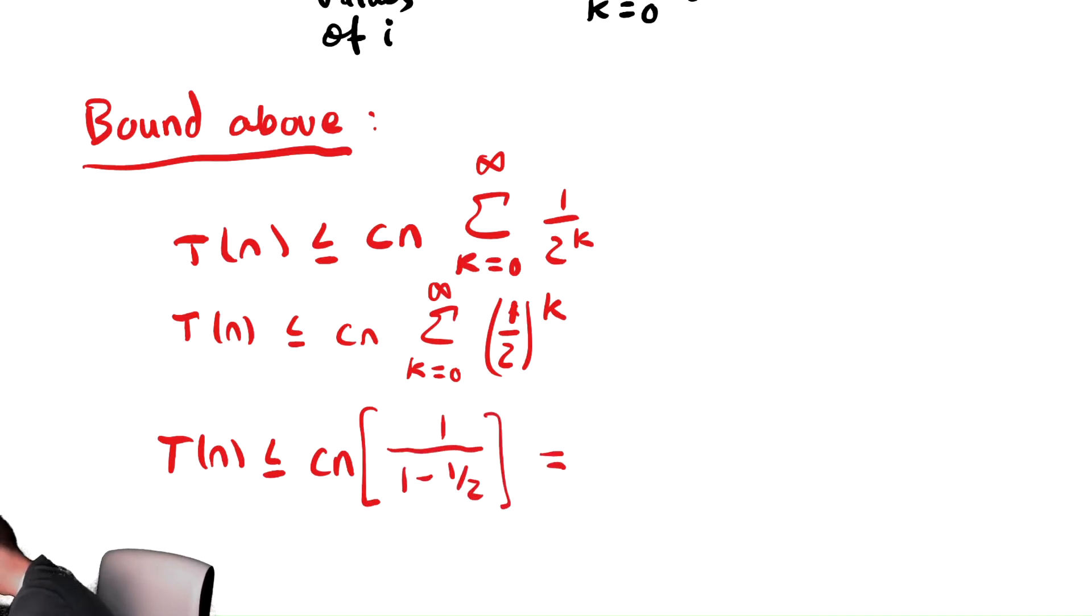So that's equal to 1 minus a half is a half. Dividing by a half is the same as 2. So maybe we write out that step. cn times 1 divided by a half is equal to 2cn. So we're bounded above by 2cn.